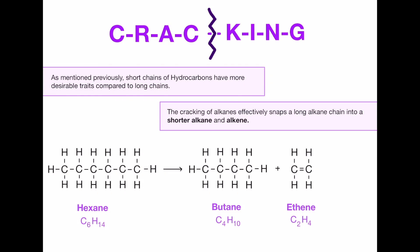Here is an example: hexane makes butane and ethene. You'll notice we have an alkane at the start — hexane — making butane, which is a shorter alkane, and also an alkene. It needs to make an alkane and an alkene because otherwise you'd have some missing hydrogens. This is why it's good for combined science students to know about alkenes as well — even though there's not much detail in your spec, you do still need to know a little bit about them, so definitely don't ignore them.